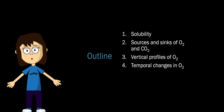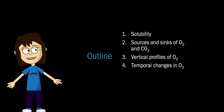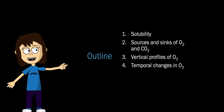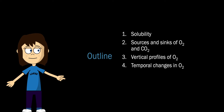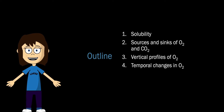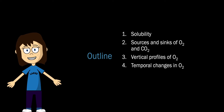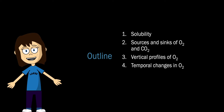Here we're going to examine oxygen dynamics in four parts. We're going to talk about solubility, the sources and sinks of oxygen and carbon dioxide, and the vertical and temporal changes in oxygen in a lake. And while we're mostly going to talk about oxygen, what you'll see is that oxygen and carbon dioxide vary in tandem. Often if we know something about oxygen, we know something about carbon dioxide.